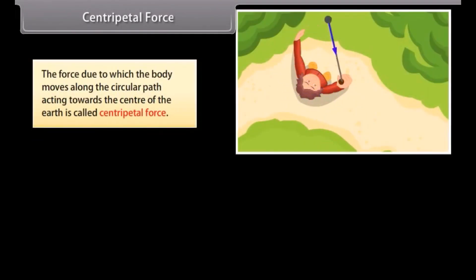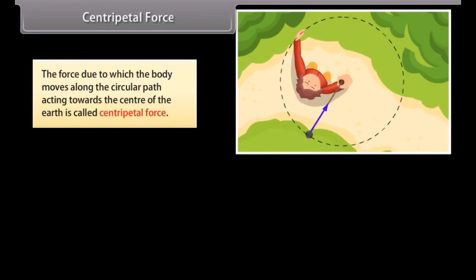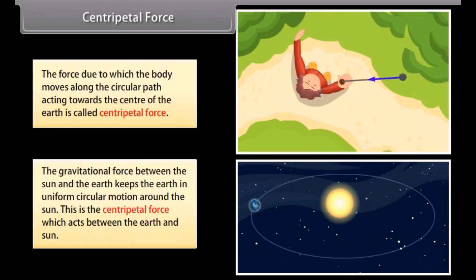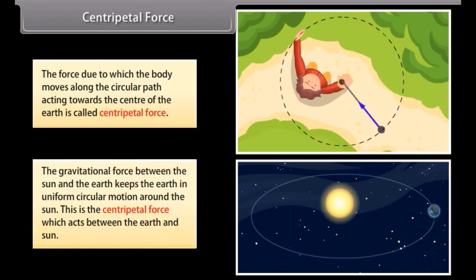Centripetal force. The force due to which a body moves along a circular path, acting towards the center of the earth, is called centripetal force. The gravitational force between the Sun and the earth keeps the earth in uniform circular motion around the Sun — this is the centripetal force which acts between the earth and the Sun.